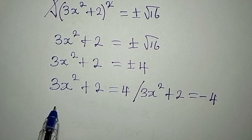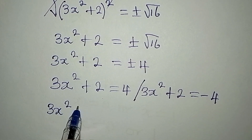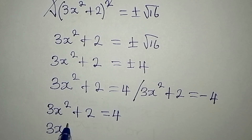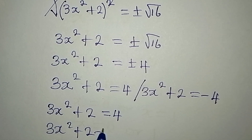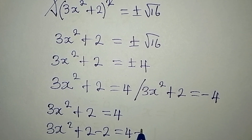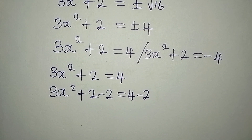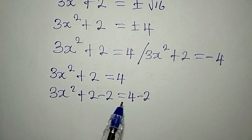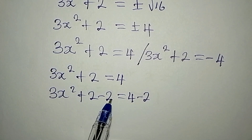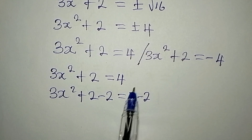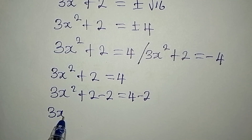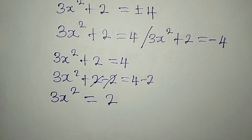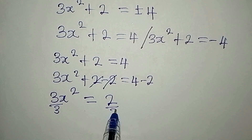Dealing with the first equation: 3x squared plus 2 equals 4. We take the additive inverse of 2 and add it to both sides — that is, subtract 2 from both sides. So 3x squared plus 2 minus 2 equals 4 minus 2, giving us 3x squared equals 2. Then we divide both sides by 3.